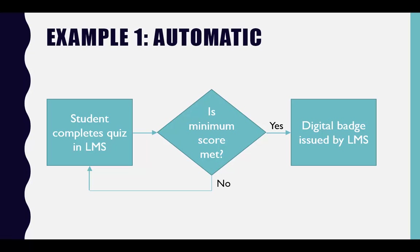An example of this happening automatically, like it does for my Spark tutorials, is that a student can complete a quiz and meet the minimum score. For the Spark tutorials, that's 100% completion. Then the LMS can just issue the digital badge. If the score isn't met, the student can try it again or not.